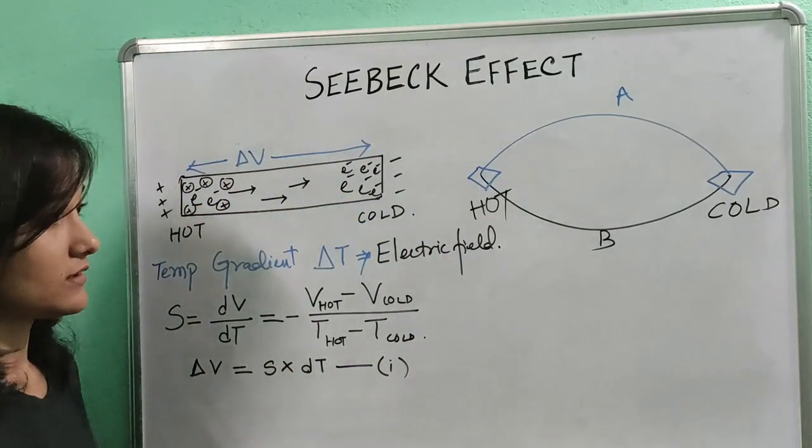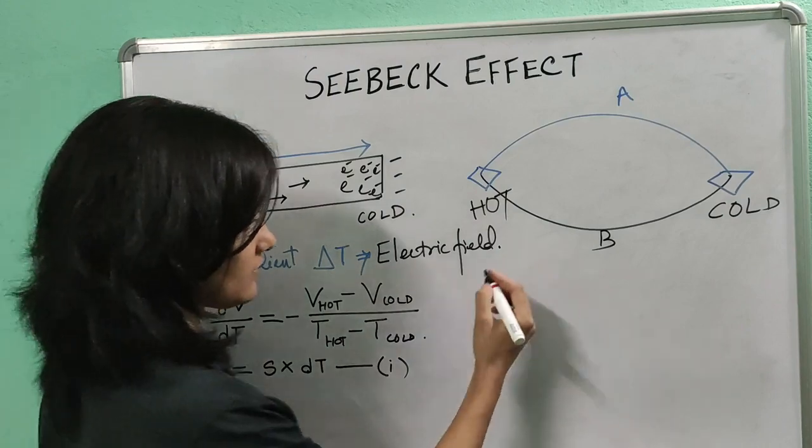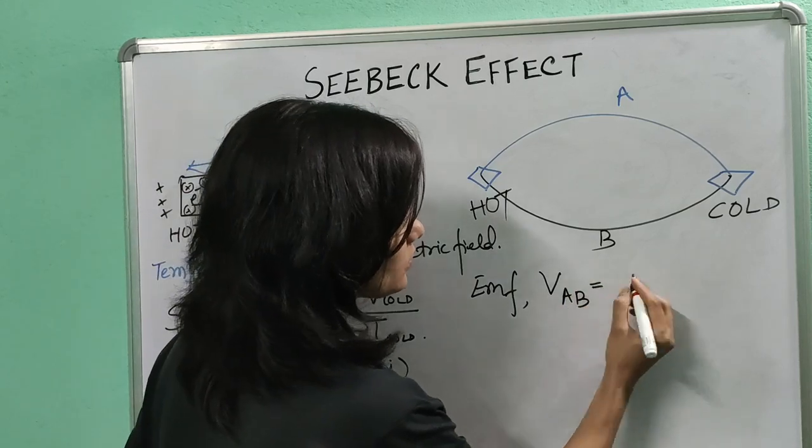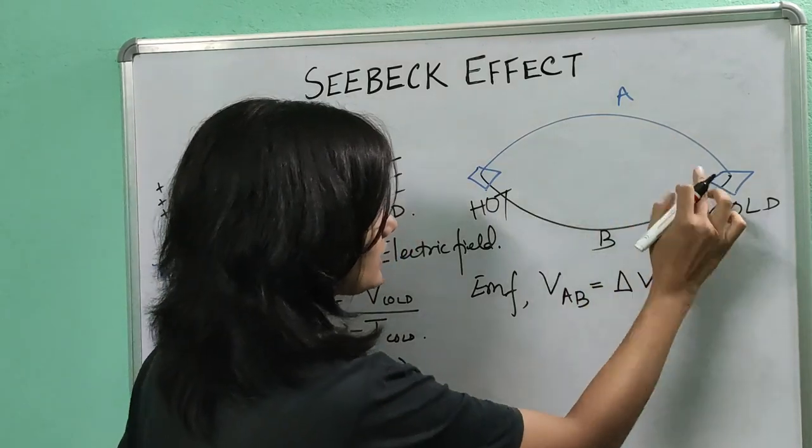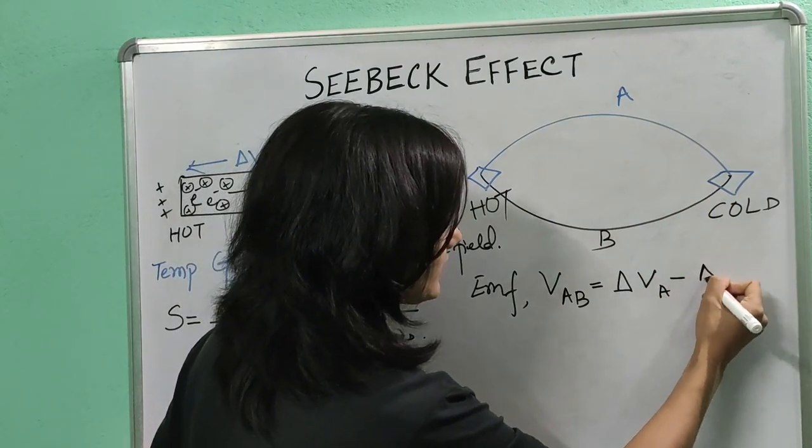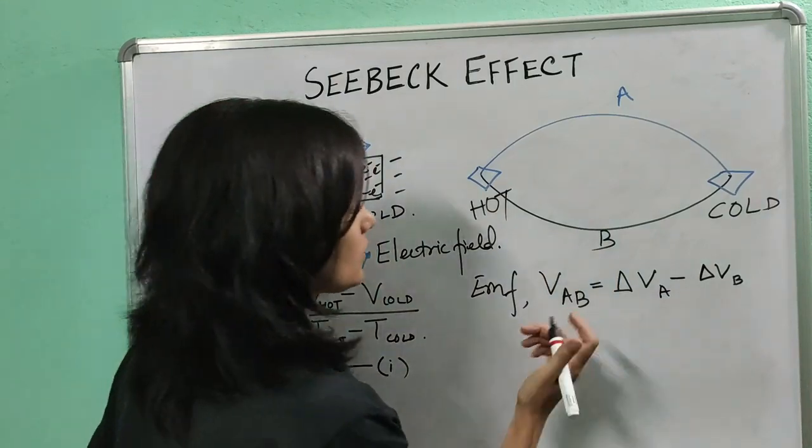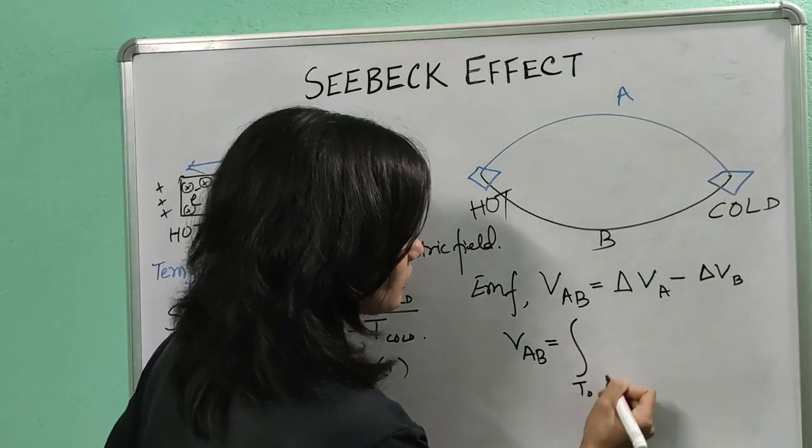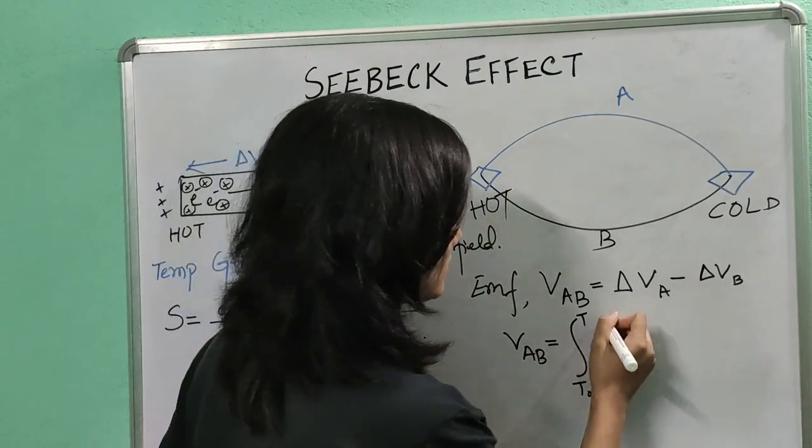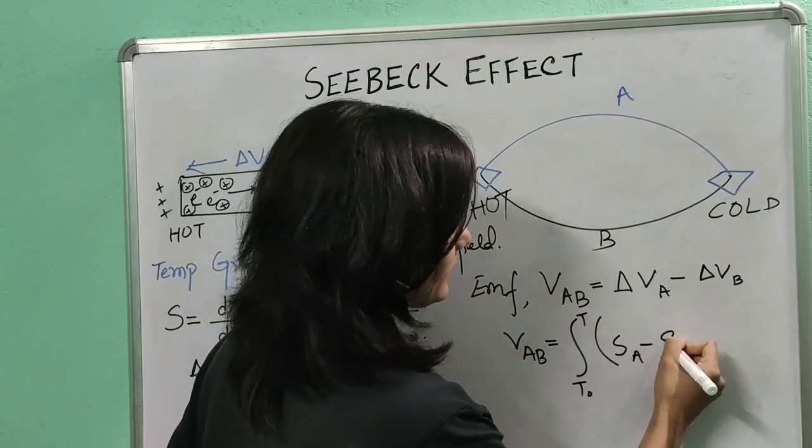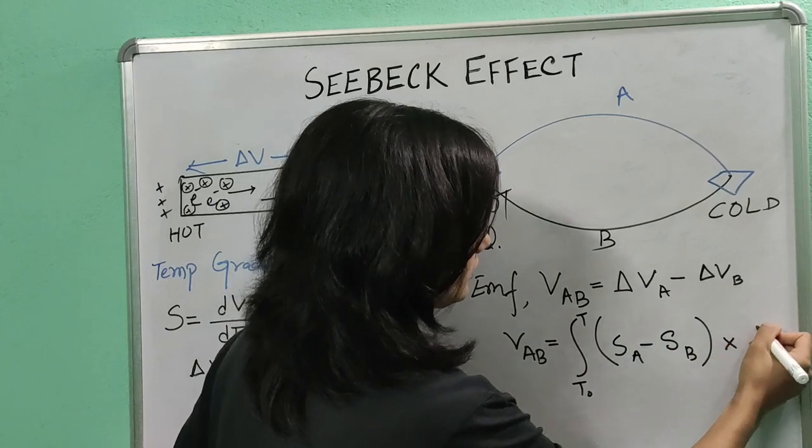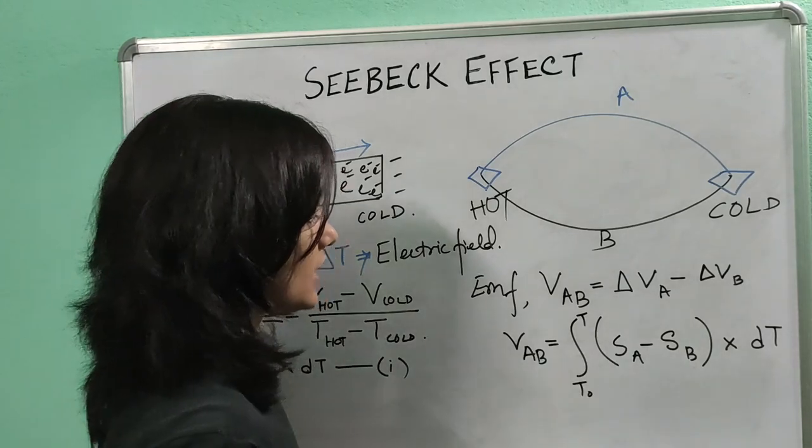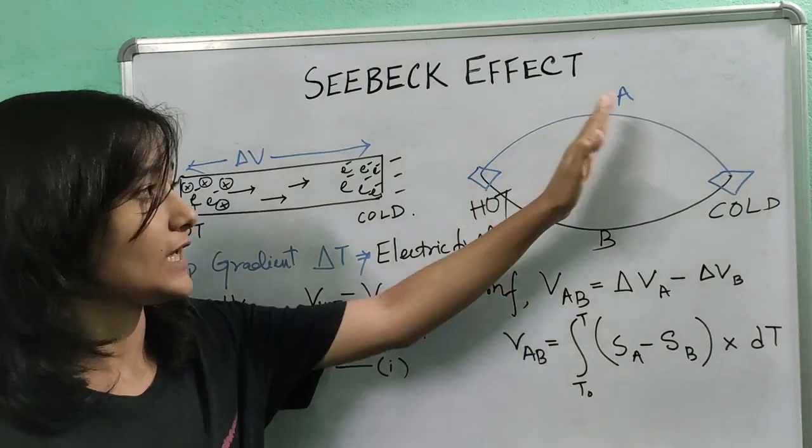Then the EMF which is generated across the wires will be given as VAB equals delta V of wire A minus delta V of wire B. This VAB can also be written as integration from T0 to T, which is the initial to the final temperature, Seebeck coefficient of A minus Seebeck coefficient of B, into dT. Because from equation 1 we know that delta V equals S into dT, so we can replace it here and we will get the expression for the EMF generated across the wires.